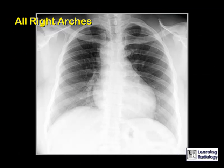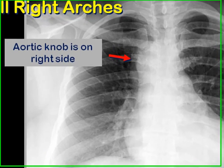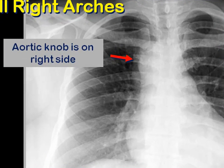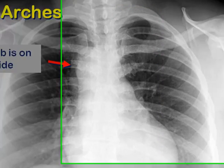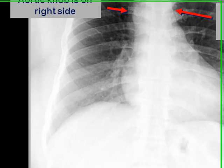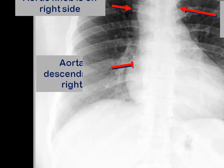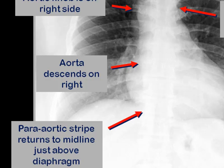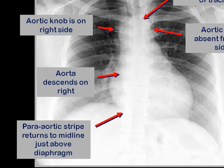All right aortic arches have certain things in common. The aortic knob is on the right side. There is leftward displacement of the trachea. There is no aortic knob on the left side. The aorta descends on the right, and usually just above the diaphragm the aorta returns to the midline and then to the left side.